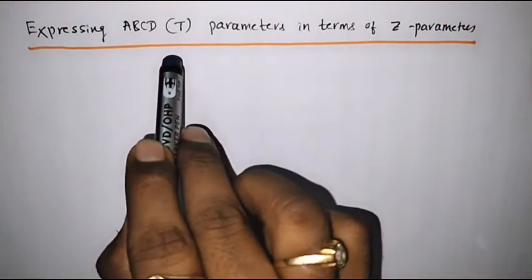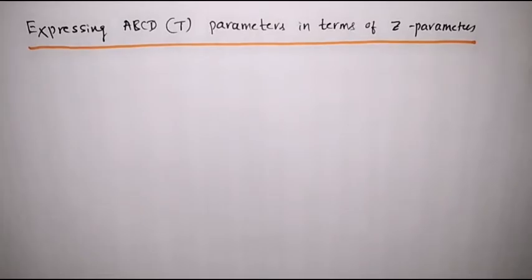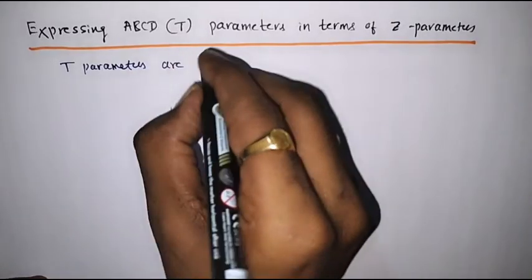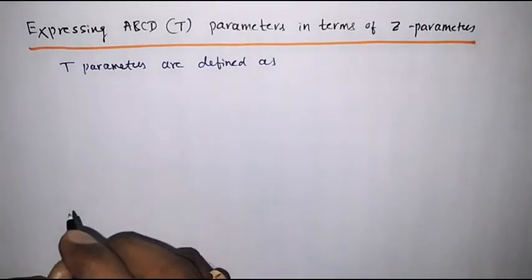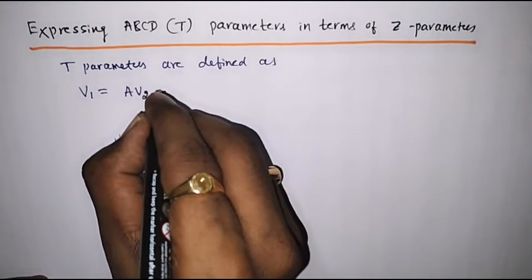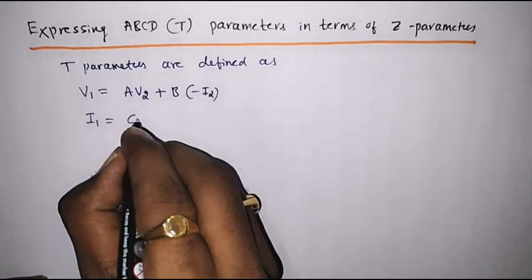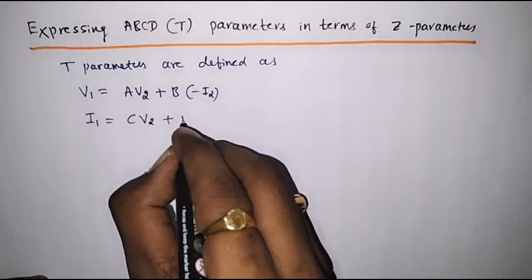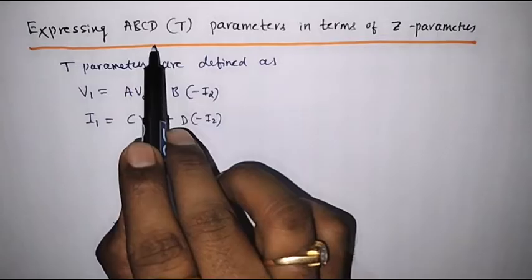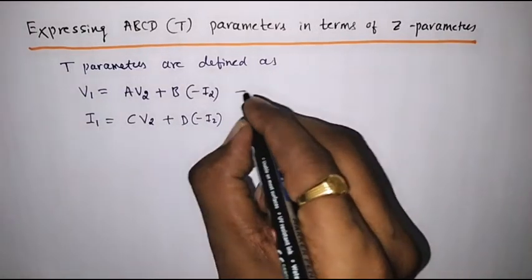Let us see how to express transmission parameters or ABCD parameters in terms of Z parameters. We know that T parameters are defined as: V1 is equal to A·V2 plus B·I2, and I1 is equal to C·V2 plus D·I2. Now we are trying to express T parameters in terms of Z parameters, keeping the ABCD T parameters as equation one and equation two.